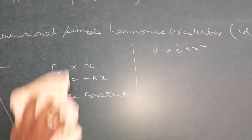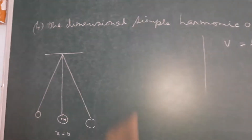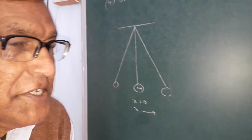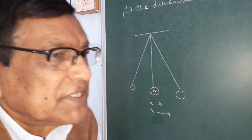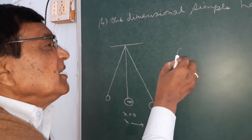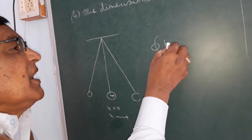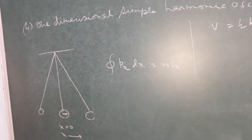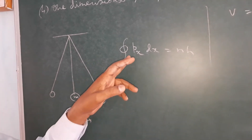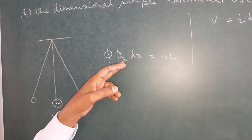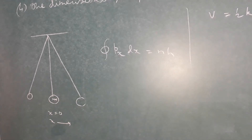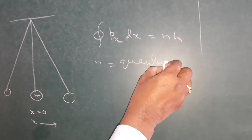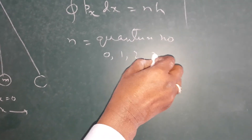Now we apply the Wilson-Sommerfeld quantization rule for this system. Since x changes periodically, it is a periodic motion, and the quantization rule is ∮px dx = nh for one complete cyclic motion, where px is the x-component of linear momentum, x is the displacement, and n is the quantum number having values 0, 1, 2, 3, etc.